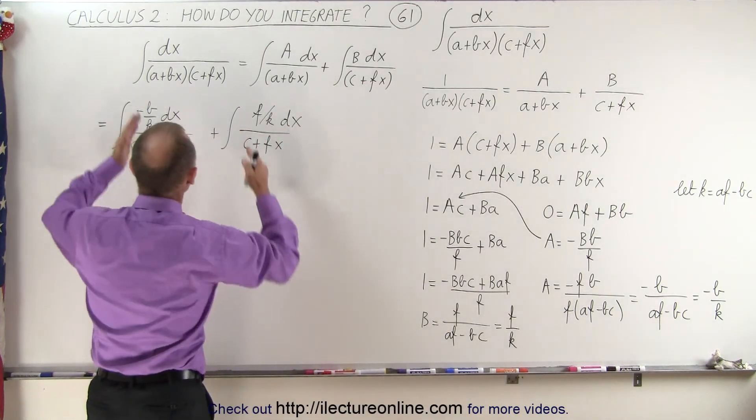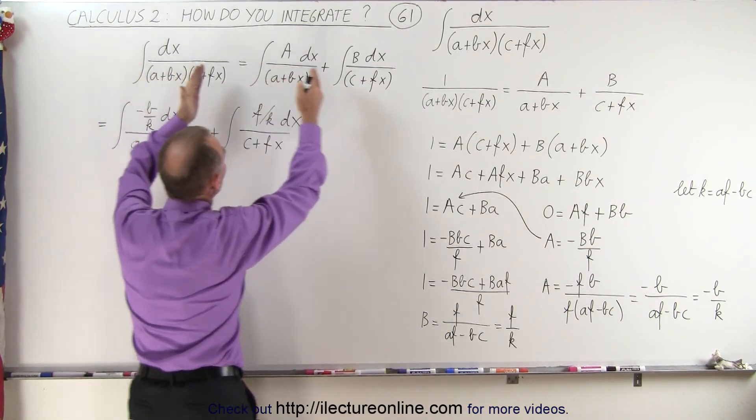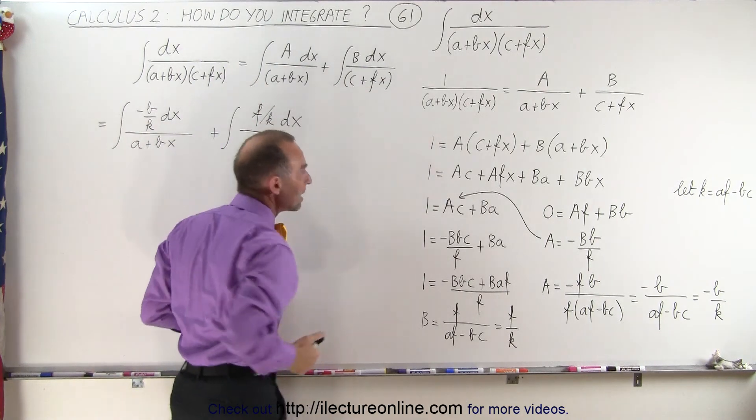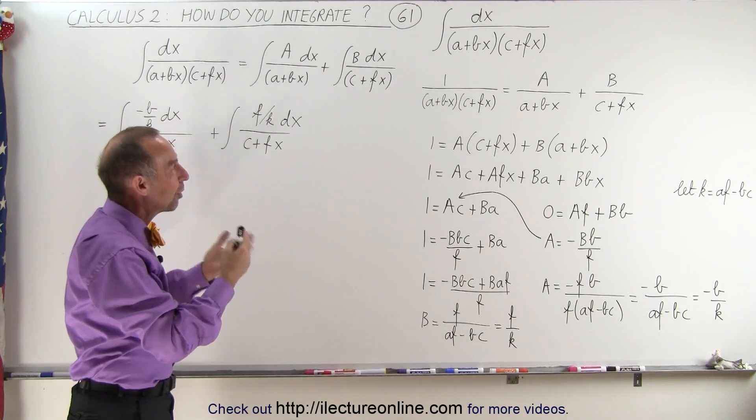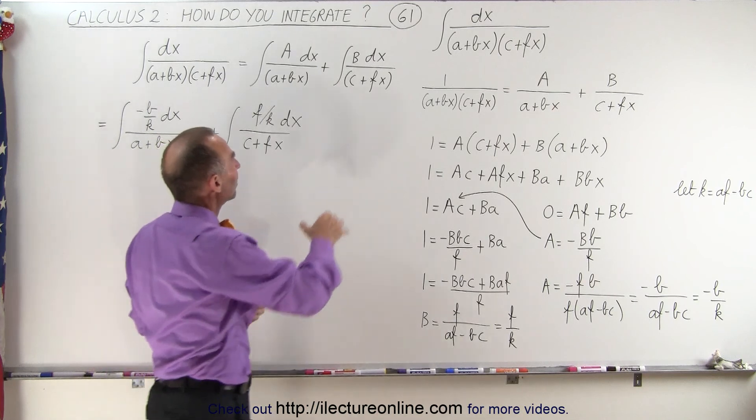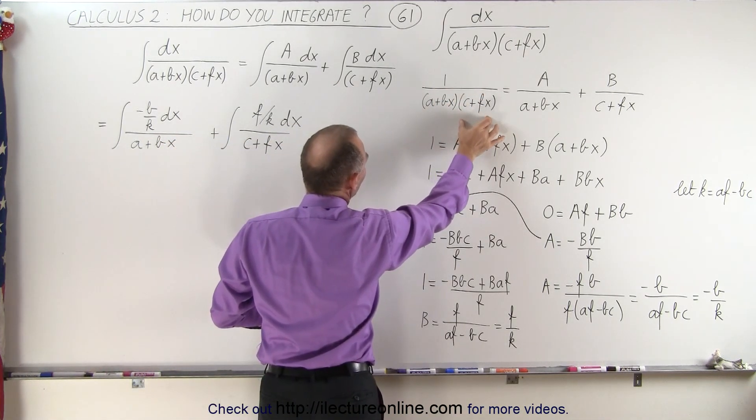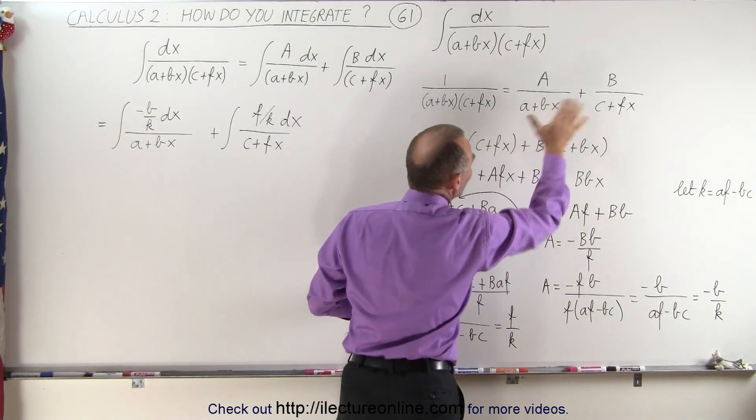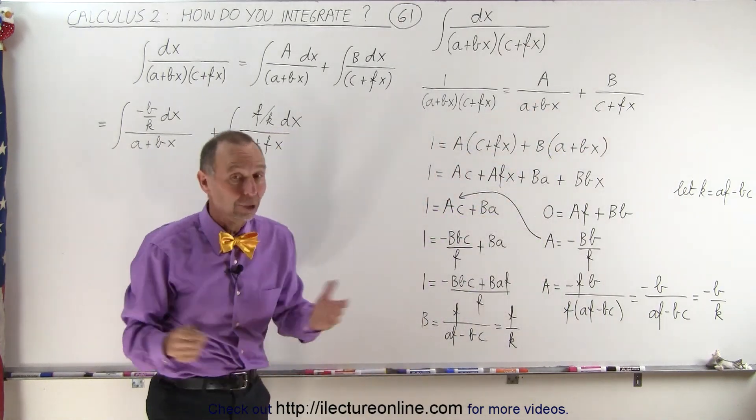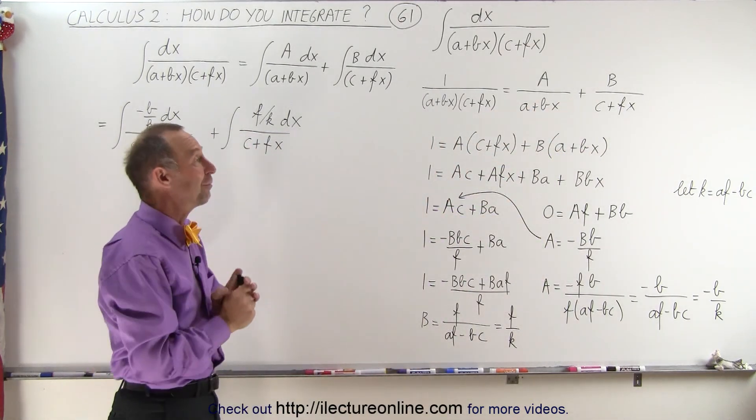So this becomes dx divided by (a + bx)(c + fx). What that means is we can take this and write that as two separate integrals using the special method called partial fractions. So 1 over (a + bx)(c + fx) can be written as two separate fractions, and all we have to do is solve for A and B.